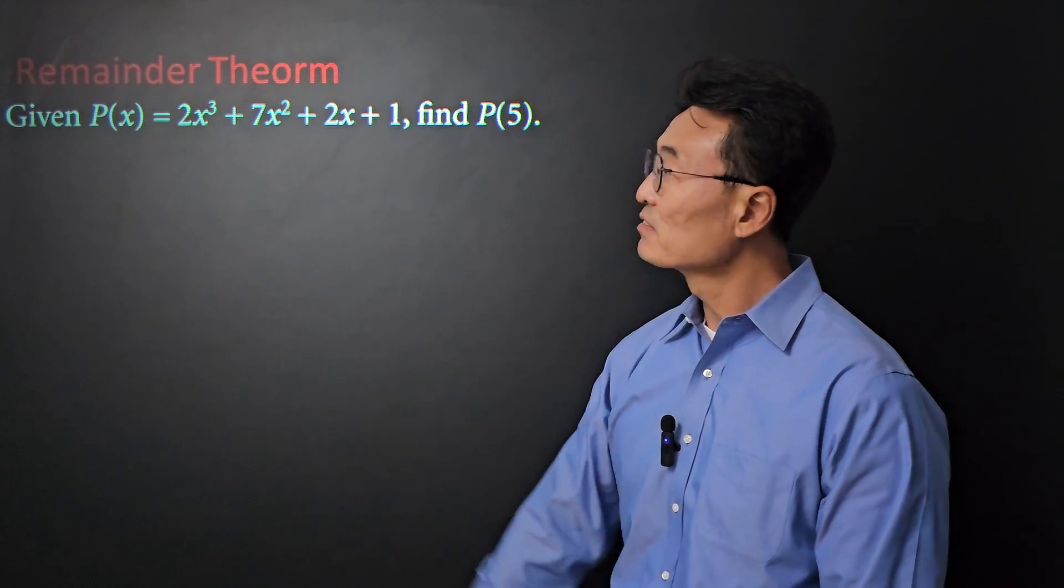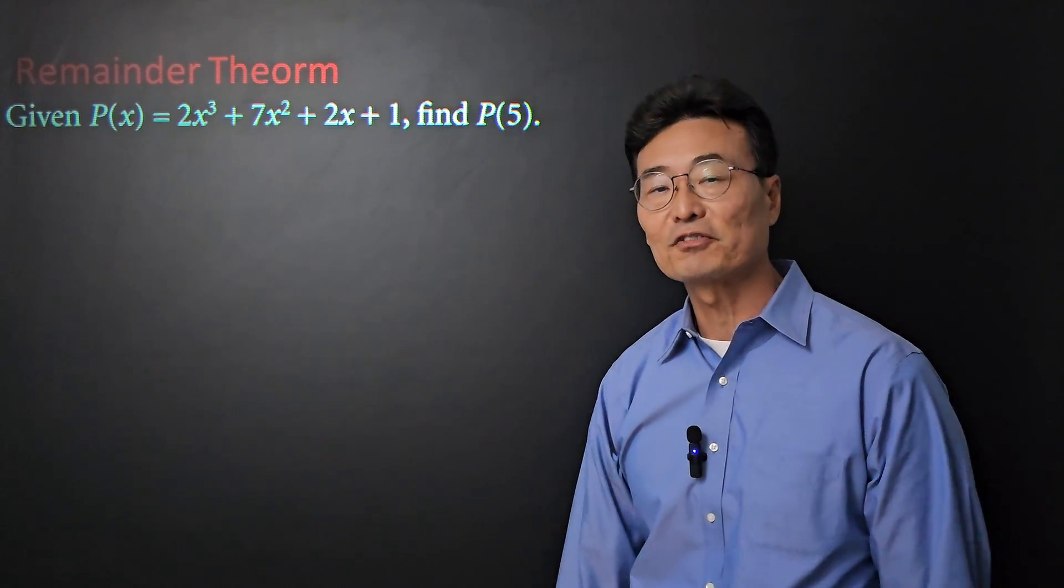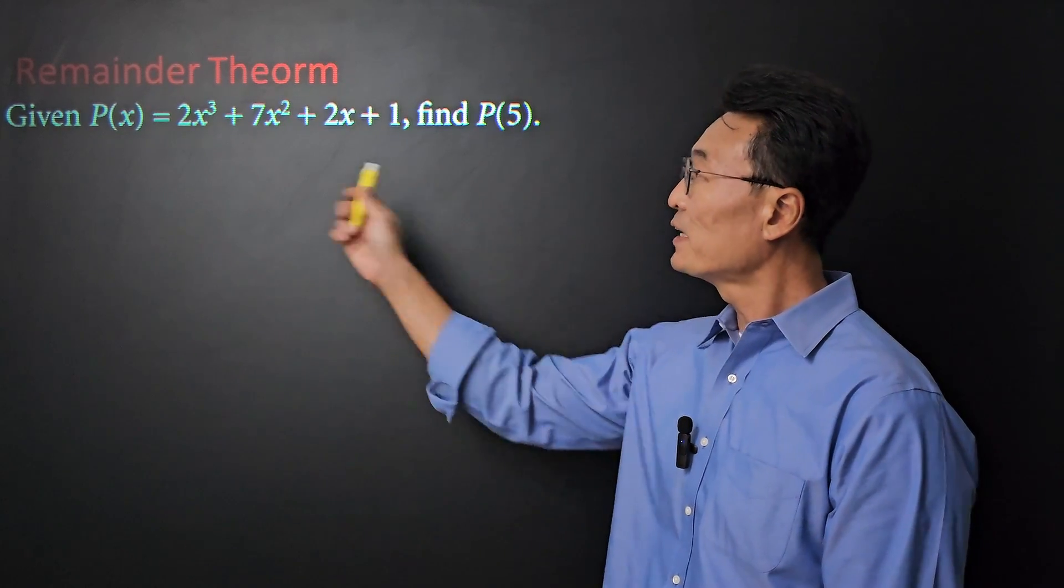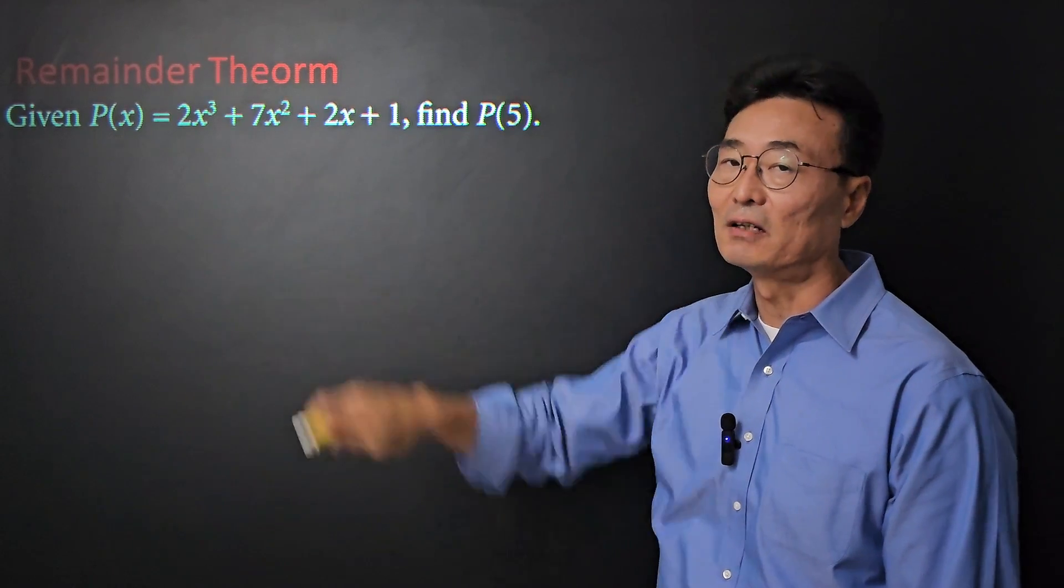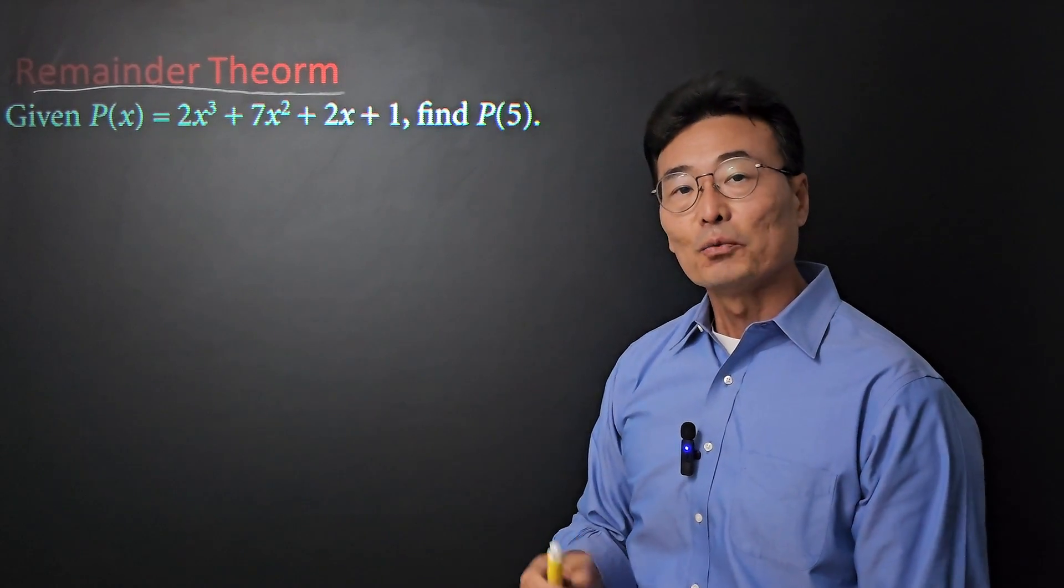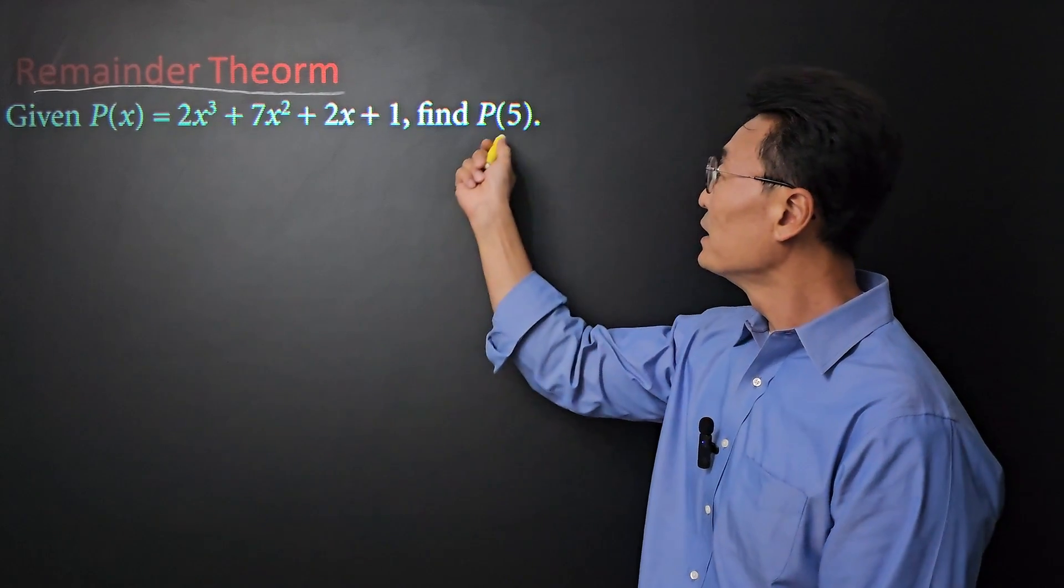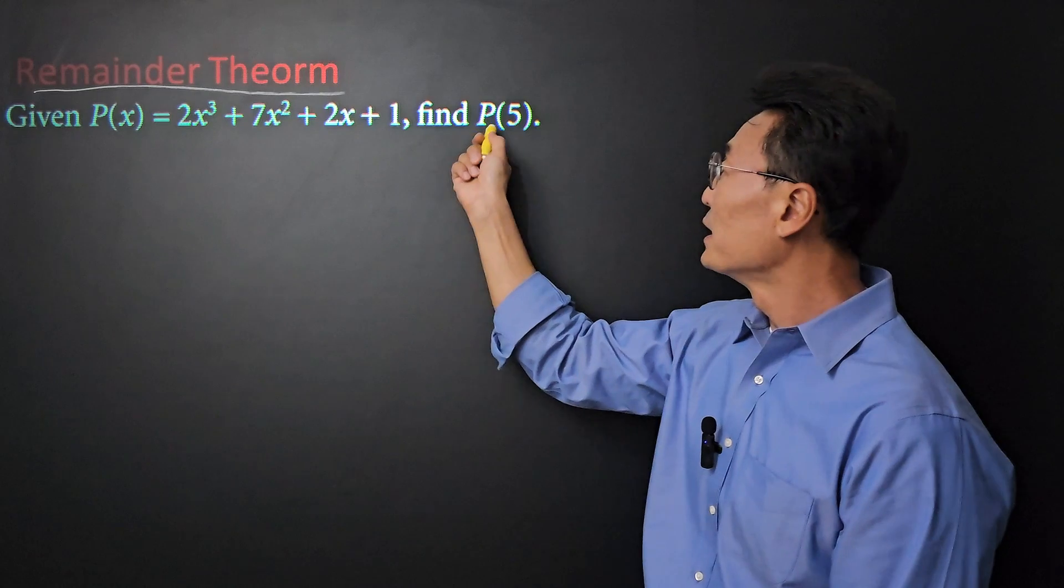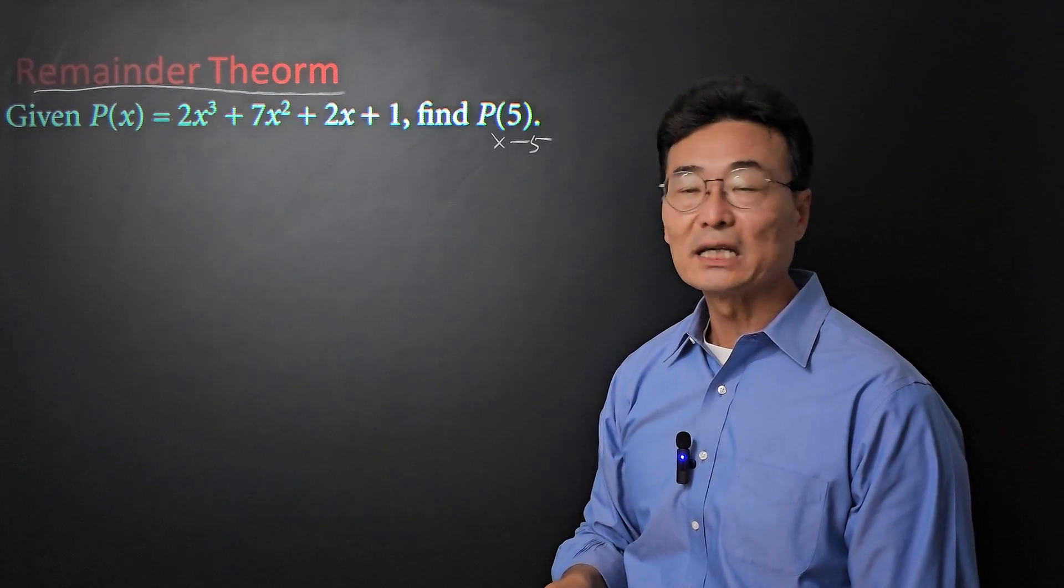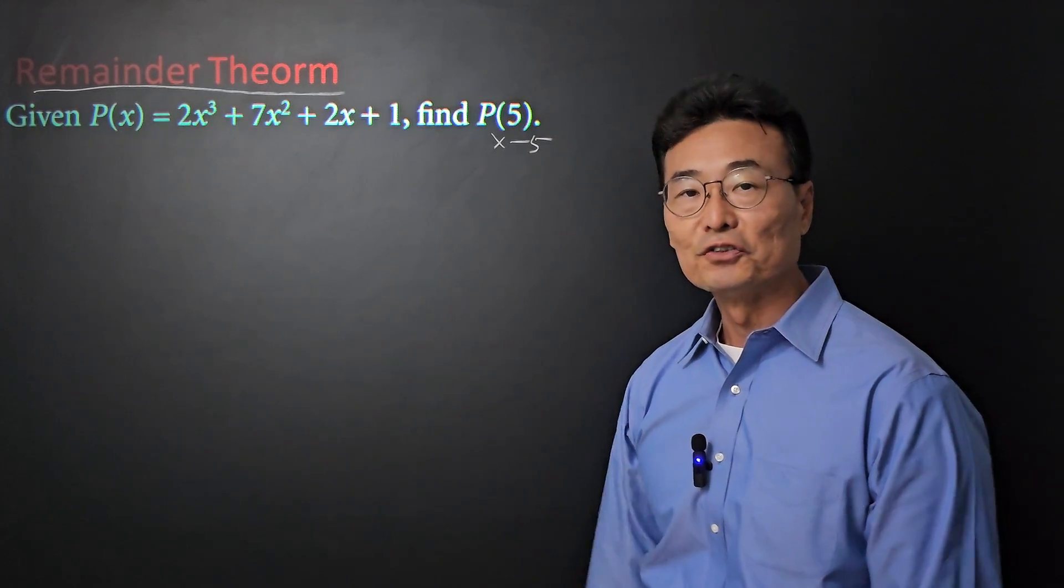Here, we have the function P of x, where it says 2x cubed plus 7x squared plus 2x plus 1, and the question says to find P of 5. To find the P of 5, we will simply take the 5, plug it into the x of the function. What remainder theorem says, however, is that we could also use the synthetic division or the long division and divide the function by x minus 5, and the remainder we get will actually equal to P of 5. Here's what I'm talking about. Let me show you using the example.